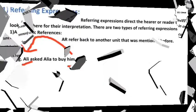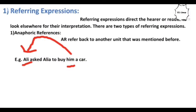We will explain each one in great detail. Number one: referring expressions. In a piece of language, cohesion is achieved by using referring expressions that direct the hearer or reader to look elsewhere for their interpretation. Referring expressions can be of two types: first, anaphoric references, and second, cataphoric references.